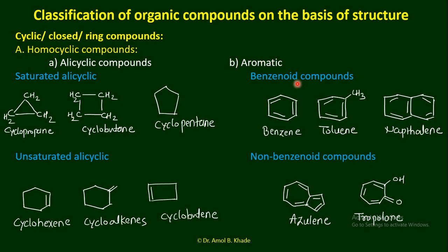Benzenoid compounds are those in which benzene is present. The structure of benzene shows alternating double and single bonds (conjugation — alternate double and single bonds). Whenever you see a benzene ring in a structure, you can refer them as aromatic — and more specifically as benzenoid compounds. Examples include toluene (benzene connected with a methyl group), and fused aromatic rings such as naphthalene, anthracene, and phenanthrene, which we will discuss in coming lectures.